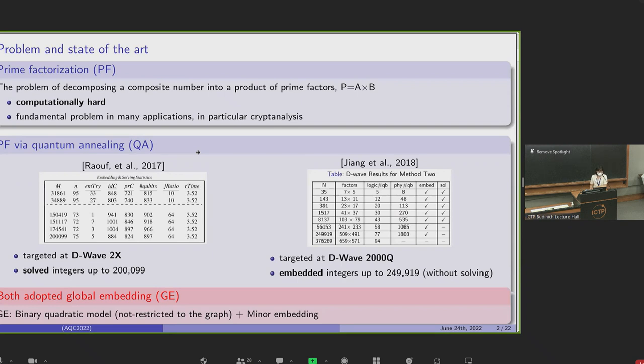Solving this problem via quantum annealing was first proposed by Rolf et al. in 2017. They proposed a method for encoding the prime factorization problem into QUBO and demonstrated that integers up to 200,000 can be solved by D-Wave 2X processors. And then in 2018, Jiang et al. proposed another encoding approach, and they claimed large numbers up to about 250,000 can be embedded to D-Wave 2000Q processors.